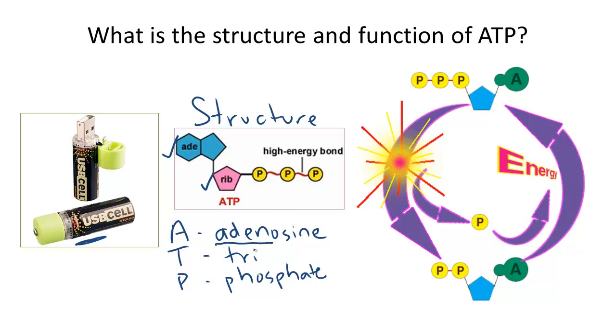And is also bonded to 3 phosphate groups. Hence the word tri for 3. And P noted here, these are noting phosphate molecules.